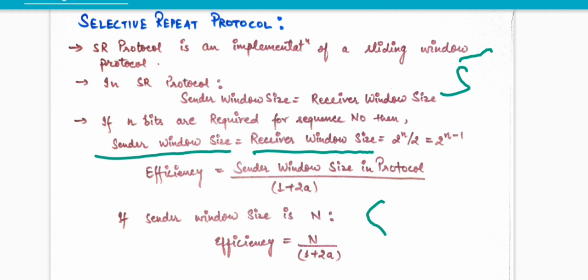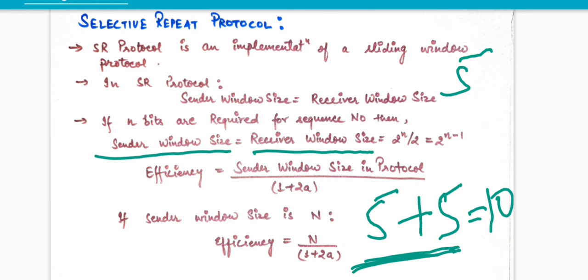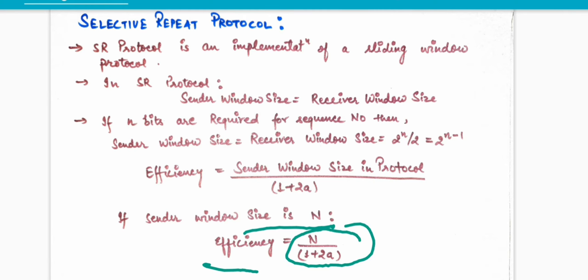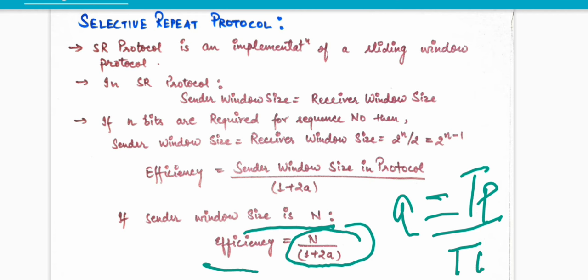This is a very important point. If sender window size is n, then efficiency is equal to n upon (1 + 2a), where a is equal to tp upon tt — that is propagation delay divided by transmission delay. So a equals tp upon tt.